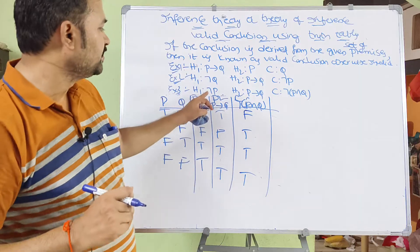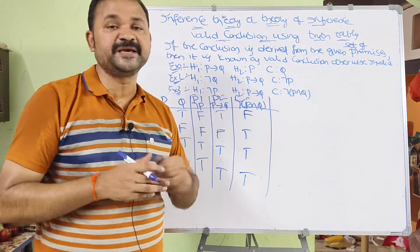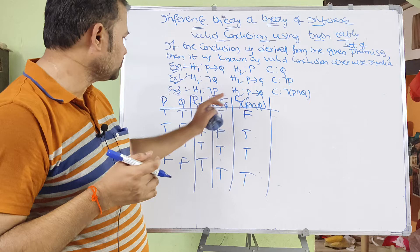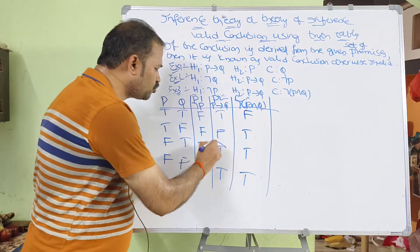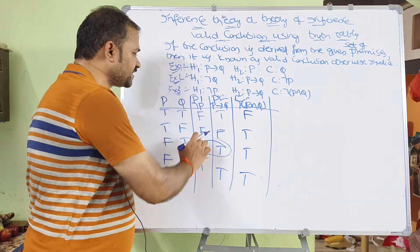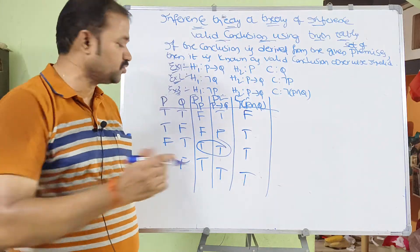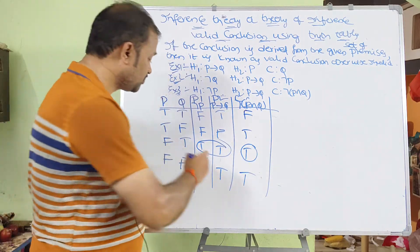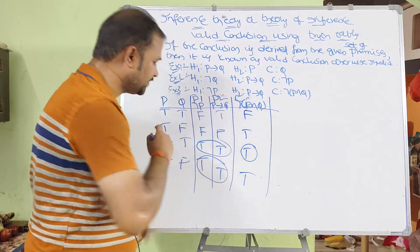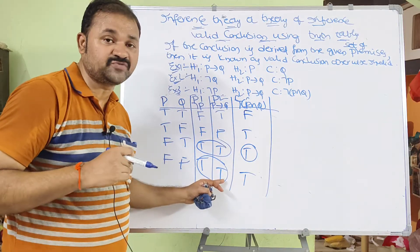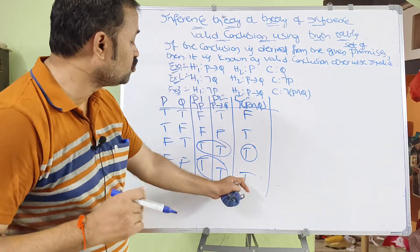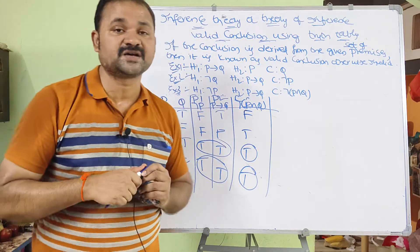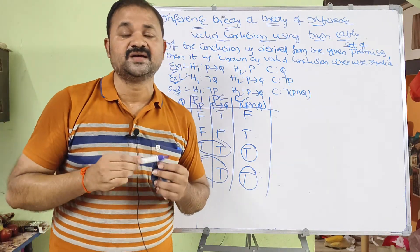We observe negation P (premise 1) and P implies Q (premise 2). In the rows where both premises are true — the last two rows — the conclusion is also true. So we can say that the given set of premises are producing a valid conclusion.